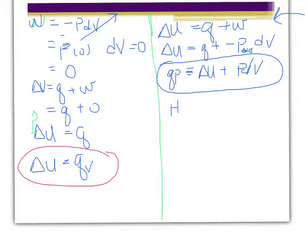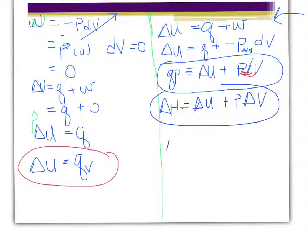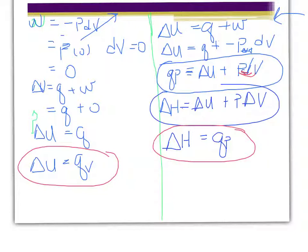The enthalpy H is defined as ΔH equals ΔU plus P·ΔV. Since these two expressions are equal, ΔH equals the heat measured at constant pressure, q sub p. Any time we have a heat measurement under constant pressure conditions, that measurement is equivalent to measuring the enthalpy of the system. If we measure the process at constant volume, it equals the internal energy; if we measure at constant pressure, it equals the enthalpy.